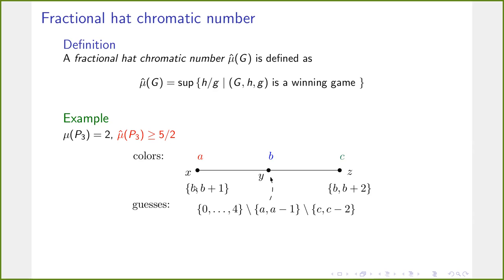Let me quickly sketch how the strategy works for five available hat colors and two guesses on path P3 with vertices X, Y, Z receiving colors A, B, C. We consider colors from the set {0, …, 4} so we can use arithmetic modulo 5. The endpoints X and Z both base their guesses on the color of Y. Vertex X guesses the set {B, B+1} mod 5, and vertex Z guesses {B, B+2} mod 5.